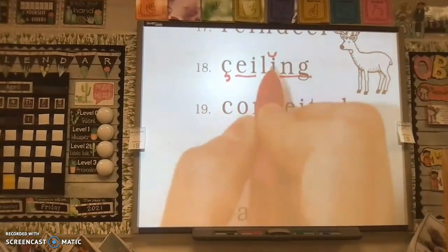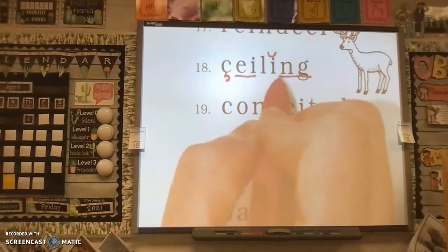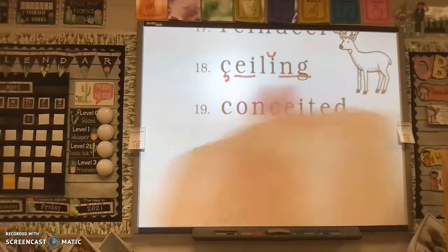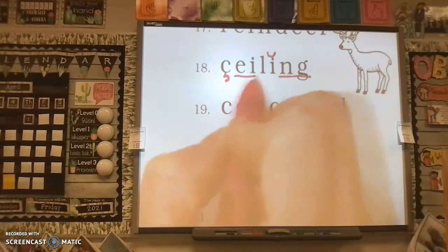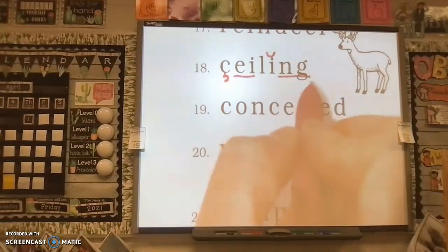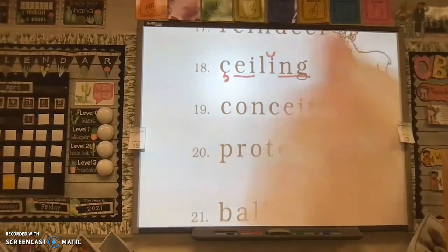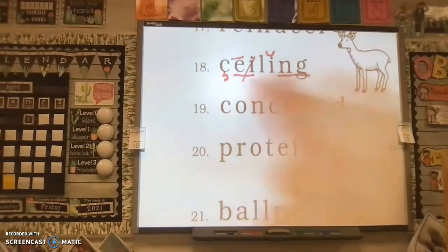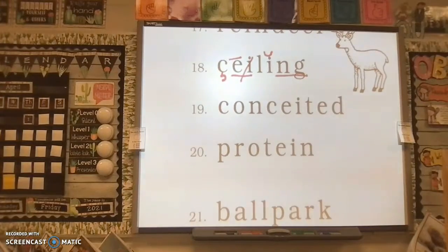We know this I is going to say the short I sound, and we know this C, because of the E, is going to make us the S sound, so we know it's going to say S-something-L-ing. So let's go ahead and figure it out. S-E-I-L-ing, ceiling. Yes, ceiling. So we're going to make it say the long E sound.